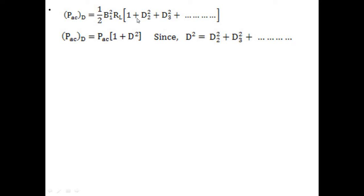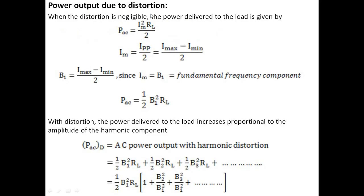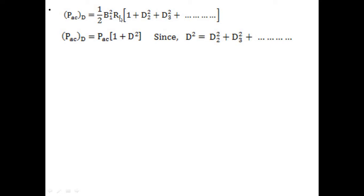We know D2 = B2/B1, which is the distortion for the second harmonic. The distortion produced by the third harmonic is D3 = B3/B1, and so on. The distortion due to the nth harmonic is Dn = Bn/B1. So the expression becomes (1/2)·B1²·RL·(1 + D2² + D3² + ...). The total harmonic distortion is D = √(D2² + D3² + D4² + ...), so D² = D2² + D3² + D4² and so on.